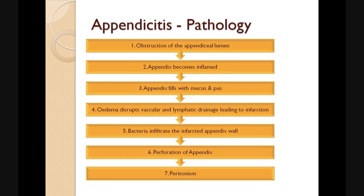So how does appendicitis develop? First of all, we have an obstruction of the appendiceal lumen. The appendix becomes then inflamed, fills with mucus and pus. The mucosa becomes edematous and it disrupts the vascular and lymphatic drainage, which causes the tissues to infarct. Bacteria then infiltrate the infarcted appendix wall, leading to the perforation of the appendix, which subsequently leads to peritonism.